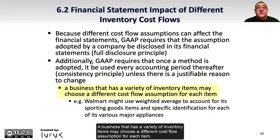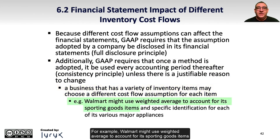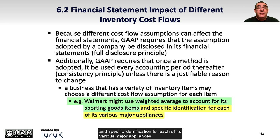A business that has a variety of inventory items may choose a different cost flow assumption for each item. For example, Walmart might use weighted average to account for its sporting goods items and specific identification for each of its various major appliances.